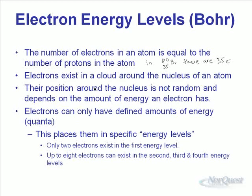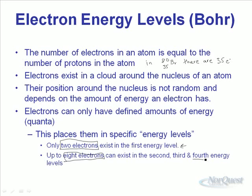In terms of rules: the first energy level can only hold a maximum of two electrons. If an element has more than two electrons, additional energy levels must be filled. Up to eight electrons can exist in higher energy levels. We'll only go up to level four, since beyond that, even more electrons per level are possible and the model becomes more complex.